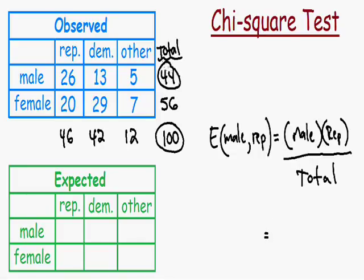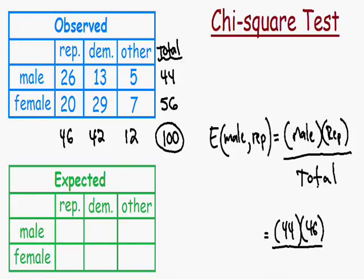Plugging everything into this formula: we have 44 total males multiplied by 46 total Republicans, all divided by the grand total of 100. 44 times 46 divided by 100 is equal to 20.24. So the expected number of male Republicans is 20.24.